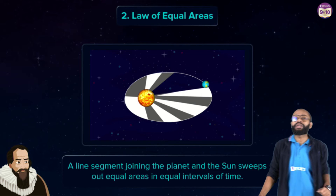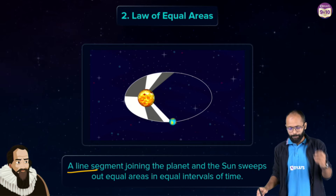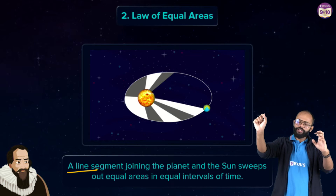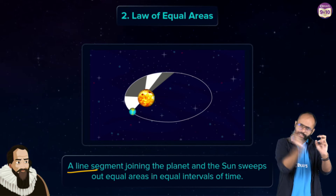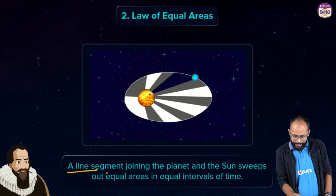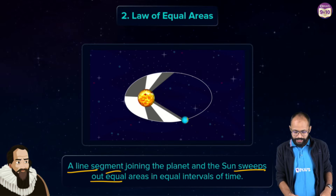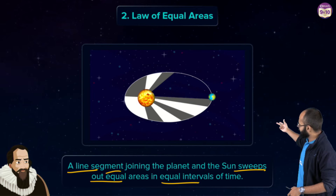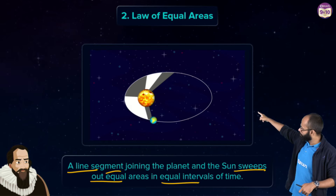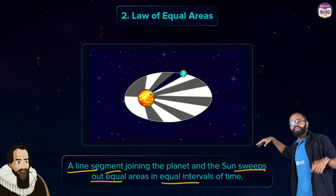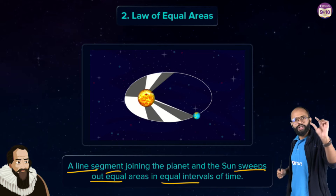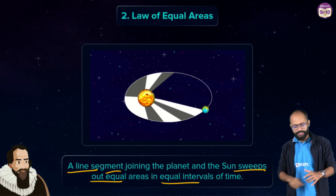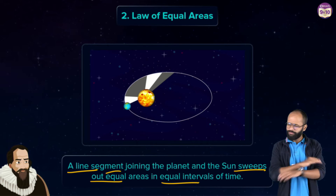The Second Law is the Law of Equal Areas. Take the sun and a planet moving in an elliptical path, and draw a line joining them. This line segment joining the planet and the sun sweeps out equal areas in equal intervals of time — whether the planet is near or far from the sun.